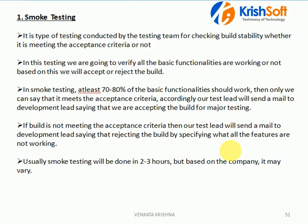Usually smoke testing will take two to three hours. The entire team will concentrate for two to three hours to verify whether major or basic functionalities are working or not. If they are working, we immediately send a mail to the development team that we are accepting the build. If something is not working and there are many showstoppers, we send a mail saying it does not meet the acceptance criteria — hence we are rejecting the build.